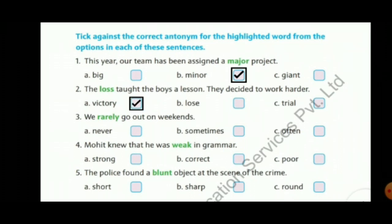Third sentence: 'We rarely go out on weekends.' The highlighted word is rarely; options are never, sometimes, often — the correct answer is often. Fourth sentence: 'Mohit knew that he was weak in grammar.' The highlighted word is weak; options are strong, correct, poor — the antonym of weak is strong.